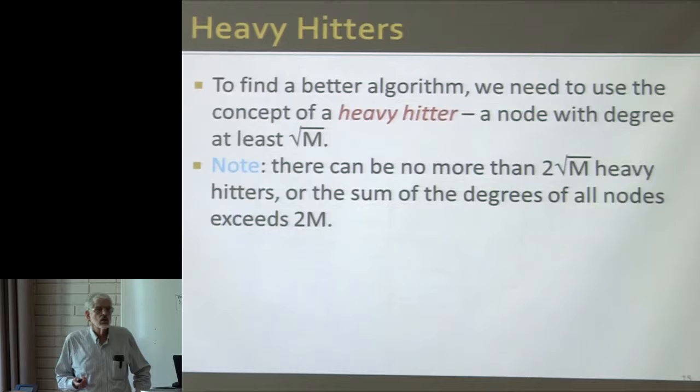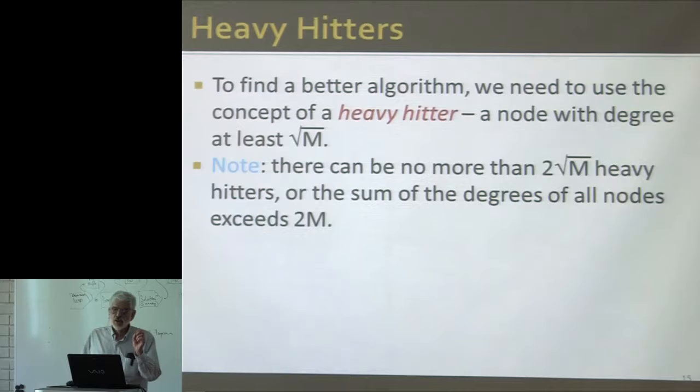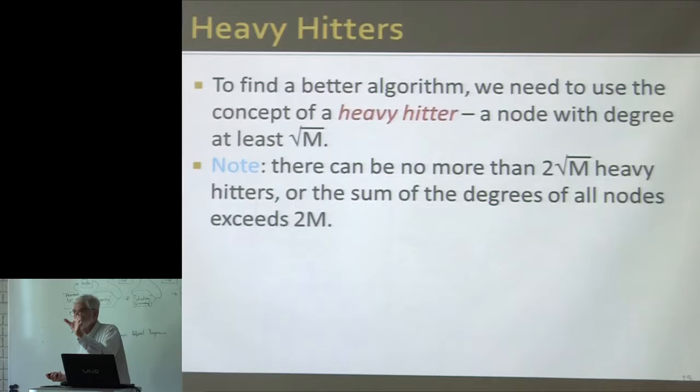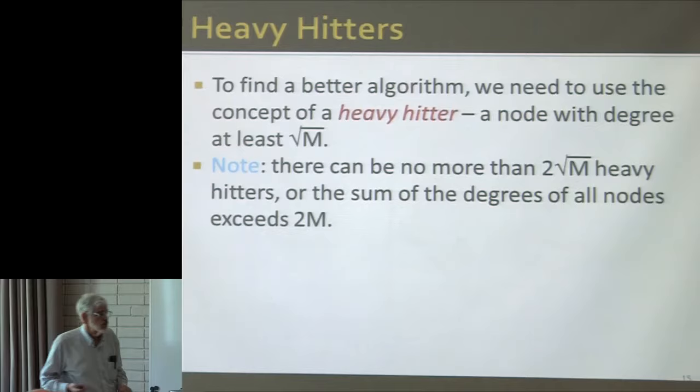Because each heavy hitter has degree at least √m, the total degrees of all the heavy hitters can't exceed 2m — which is the total degree of all the nodes in the graph, since each of the m edges contributes one to the degree at each of its ends.